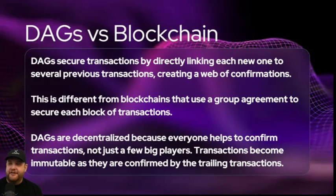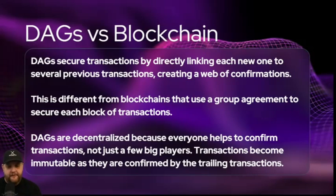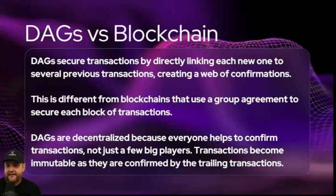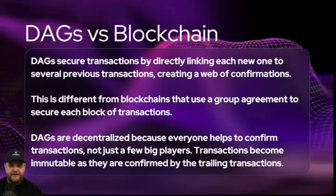DAGs secure transactions by directly linking each new one to several previous transactions, creating a web of confirmations. When you think of a blockchain, you think of blocks chained together in a linear fashion — but with a DAG, it's transactions hitting validators from every angle, with different validators or groups of validators being able to approve transactions. This is different from blockchains that use group agreement to secure each block.